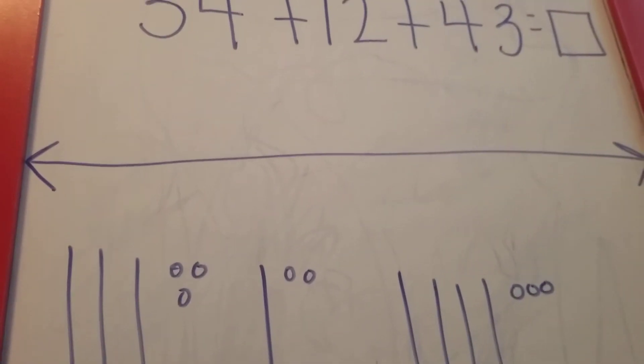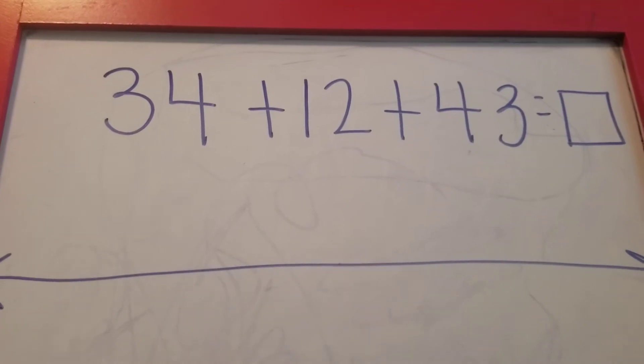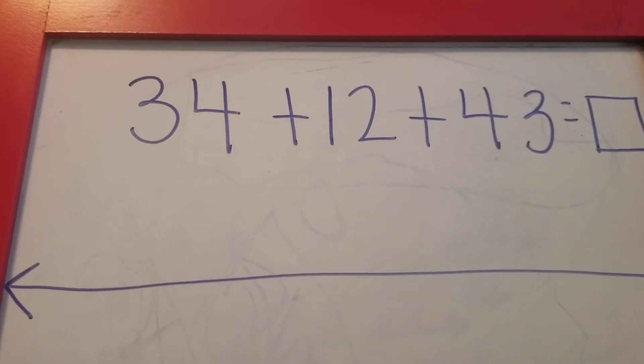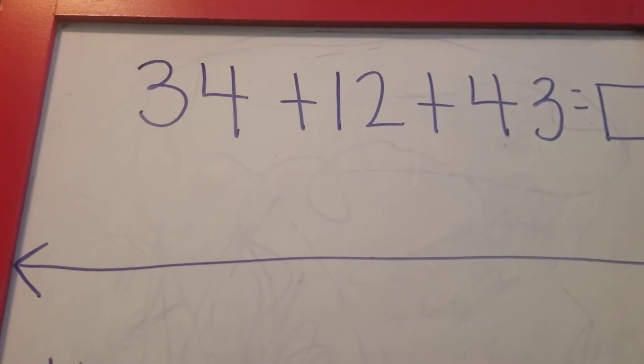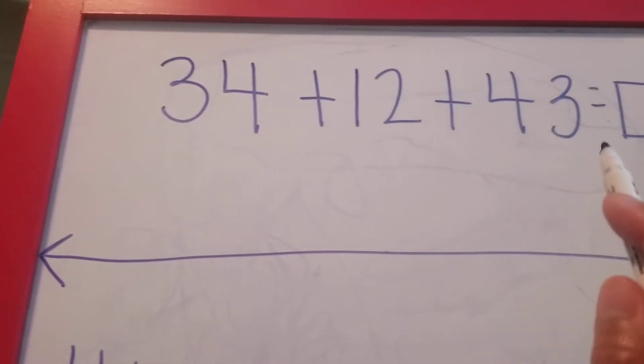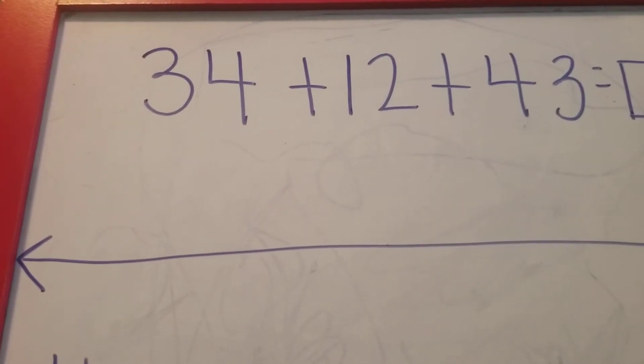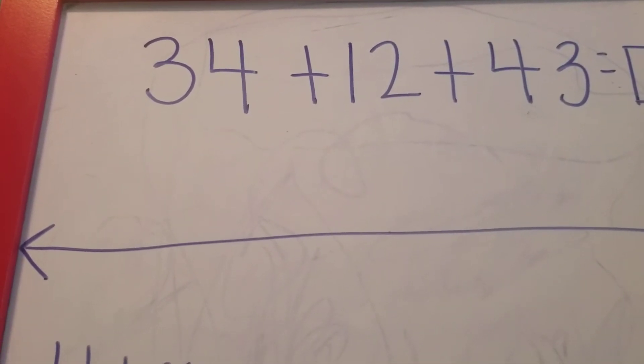Hi friends, it's Miss Rice with you and I have an equation today that we're going to work on. We are going to add three two-digit numbers: 34, 12, and 43.